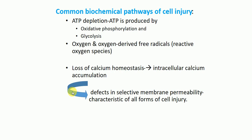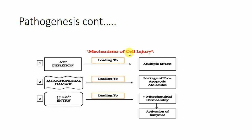As shown through the diagram of the mechanism of cell injury, ATP depression will lead to multiple effects. We know that ATP is important in many processes within the body, like excretion and reproduction, so ATP depression affects multiple parts of the body. Mitochondrial damage leads to the leakage of pro-apoptotic molecules. Increased calcium entry, caused by the defect in selective membrane permeability, leads to increased mitochondrial permeability and the activation of enzymes, which is very damaging to the cell and can cause cell injury.